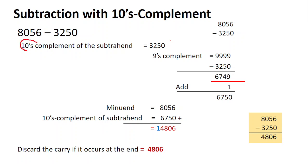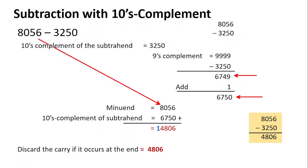This gives you the nines complement. To get the tens complement, add one to the nines complement. So 6749 plus one gives you 6750 — this is your tens complement. Now take the minuend as given in the question and add the tens complement to it.